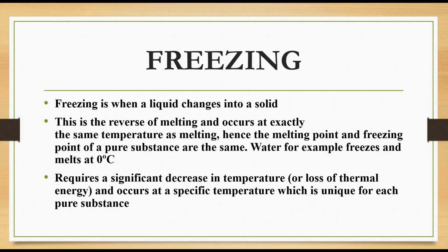This process requires a significant decrease in temperature and occurs at a specific temperature which is unique for each pure substance. Coming back to our first real life example about the change between liquids and solids — we mentioned making ice cubes in a tray. Freezing also occurs in this example. Heat transfer occurs between the warmer tray and the colder air in the freezer. The warm water loses heat to the cold air in the freezer. This heat transfer occurs until no energy is available for the particles to slide past each other, forcing them to remain in fixed positions locked in place by the force of attraction between them. This way liquid water changes into solid ice.